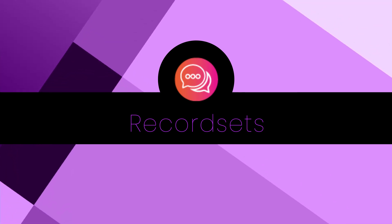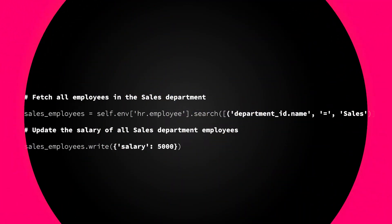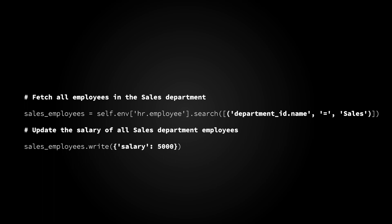This operator is used to handle null values correctly. If the right-hand side is false or none, the domain will always match. Record sets represent a collection of records in Odoo. They are returned from database search operations and developers can manipulate these record sets in Pythonic ways, such as iterating over them, indexing into them, and performing set operations. Record sets fuel the views in your Odoo backend. In this example, we use the equals comparison operator to find the department with the name 'sales', then update the returned record set with a salary property using the write method.